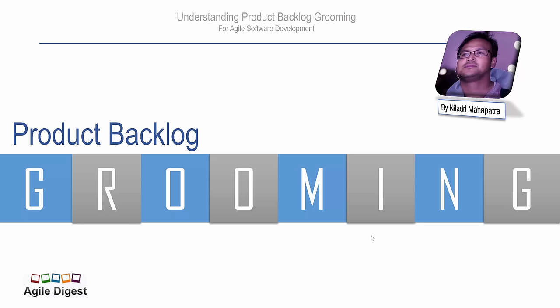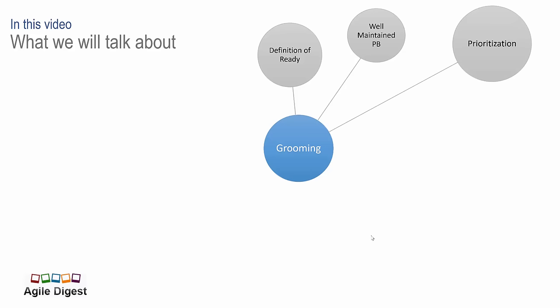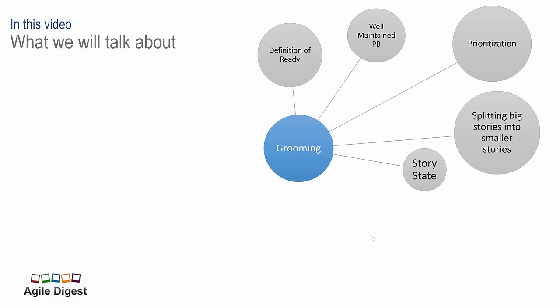Many practices don't give much value to Product Backlog Grooming, or many teams do Product Backlog Grooming and Sprint Planning at the same time. Today we'll talk about when we should do it, what the benefit is, who will be responsible, and many other points for grooming — like what is definition of ready, what is a well-maintained Product Backlog, what is prioritization, and what is splitting big stories into smaller stories. We'll also talk about different states of stories.